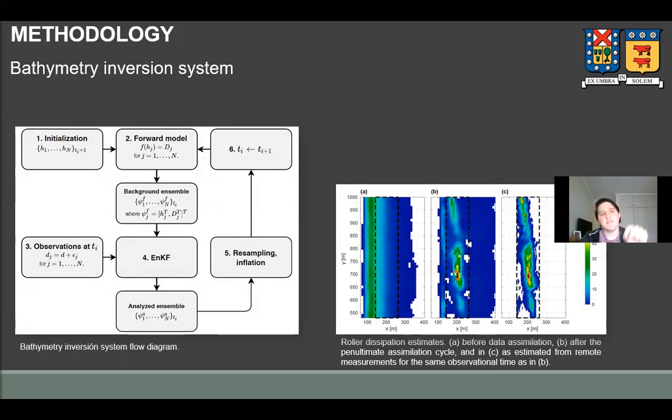As a result, several of these cycles of assimilation should retrieve improved estimates of bathymetry, given the information provided by the observations and the model physics, which is the actual link we use between depth and dissipation. Obviously, with this scheme, more than one process or measured variable could be used. Here, as a proof of concept, we used roller dissipation as we expected it to produce improvements in the surf zone.